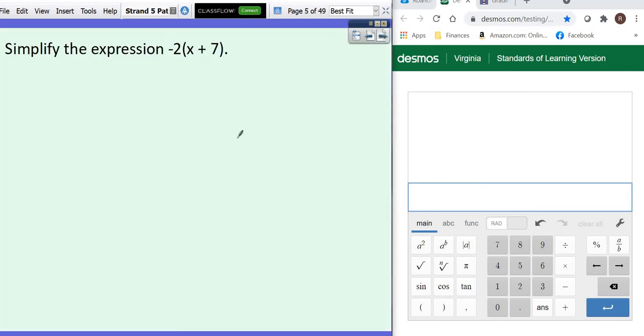All right, let's go on to the next one. Let's see. Here's an example. We are going to distribute. So if you take, you see those parentheses, that negative 2 on the outside times x, you get negative 2x.